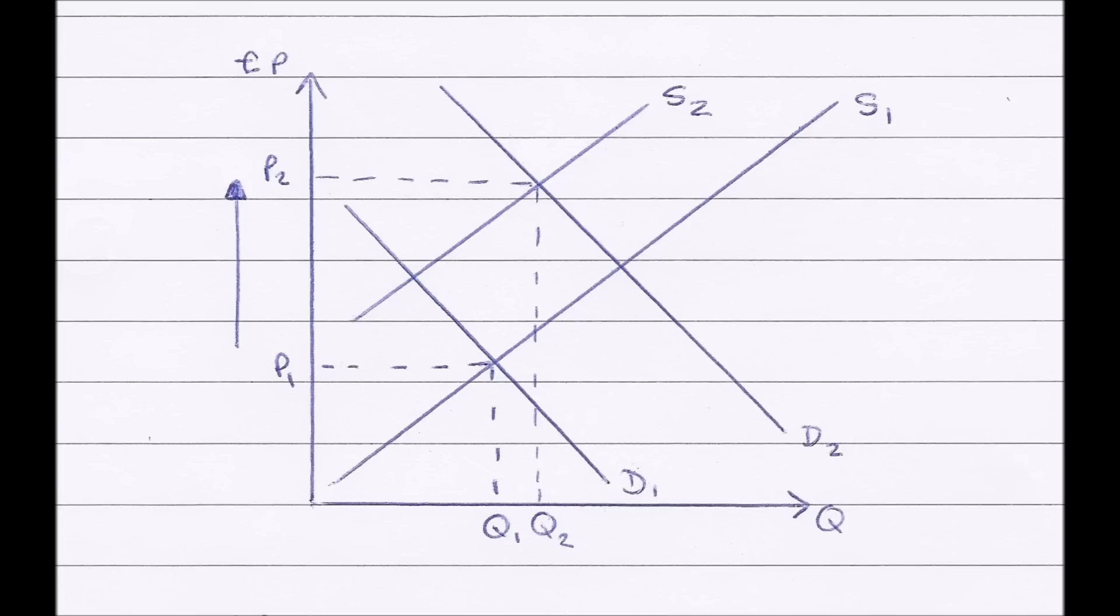So our equilibrium price has now gone from where D1 and S1 cross originally at P1 and it has risen to where S2 and D2 cross at P2. So therefore the price of the pound has increased. The value of the pound has gone up. So therefore we now have a stronger exchange rate. So therefore appreciation has occurred.